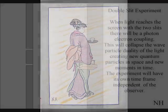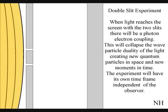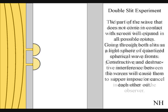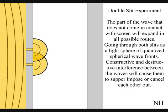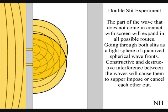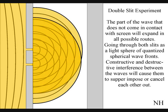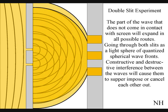The best way to see this happen directly with light is in the two-slit experiment. When the light reaches the screen with the two slits, the photons will react with the electrons of the screen. This will collapse the wave-particle duality of the light, creating new quantum particles in space and new moments in time. The part of the wave that does not come in contact with the screen will go through both slits. Interference between the waves will cause them to superimpose or cancel each other out. When this wave-function comes in contact with the screen, it will collapse, creating a moment in time and an interference pattern.